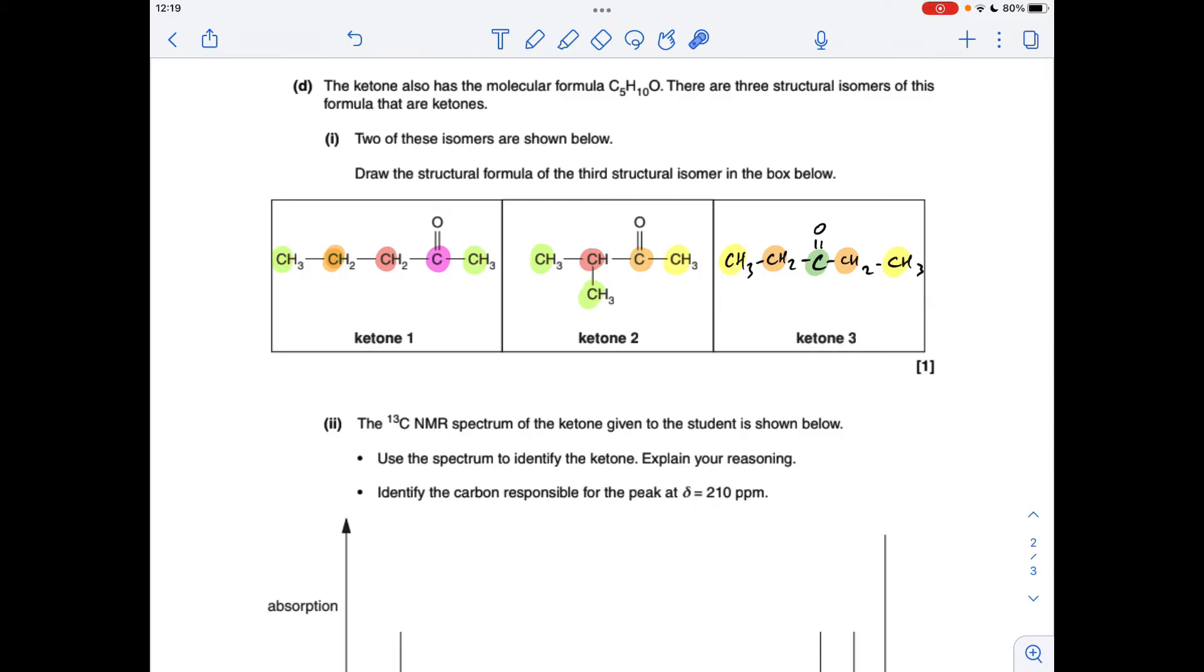Moving on to Part D, so I've color-coded the carbon environments in each of the ketones. In ketone one, we don't have any equivalent carbon environment, so there's five carbon environments in ketone one. They're equivalent in ketone two, but the rest are different, so there's four carbon environments in ketone two.